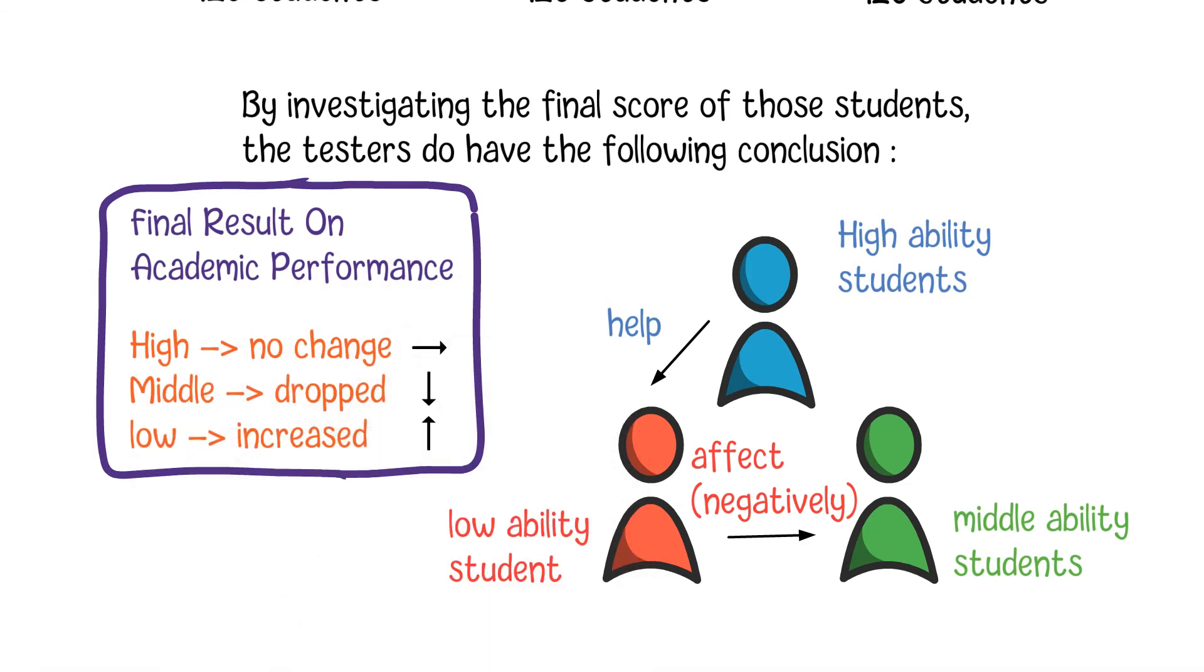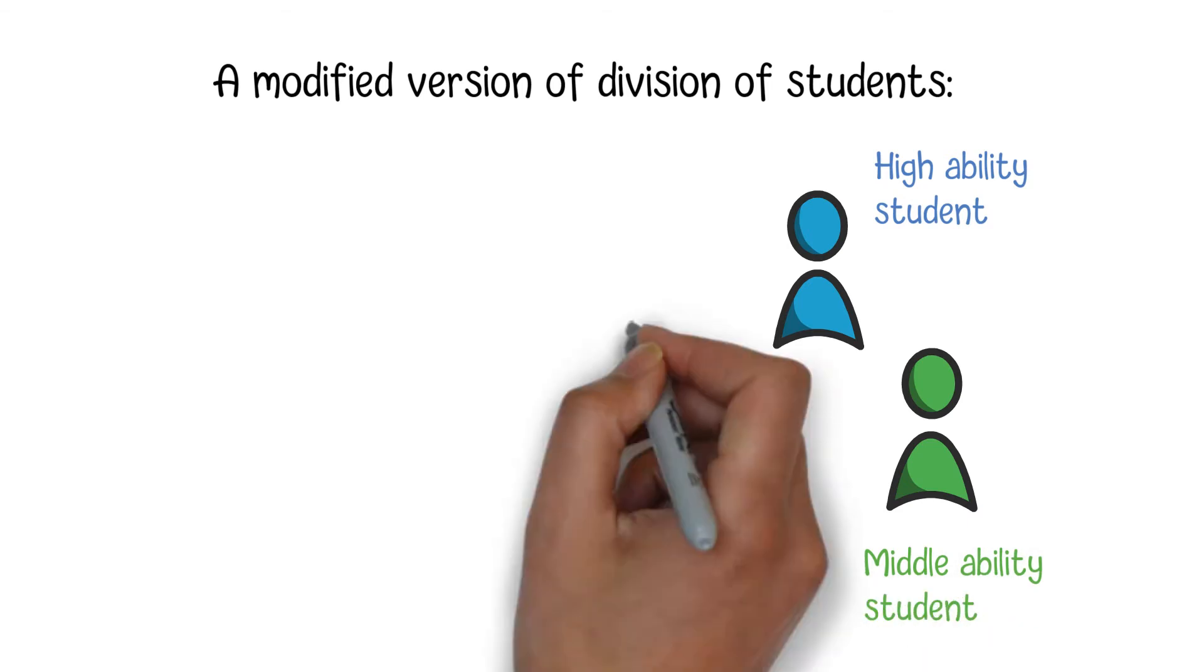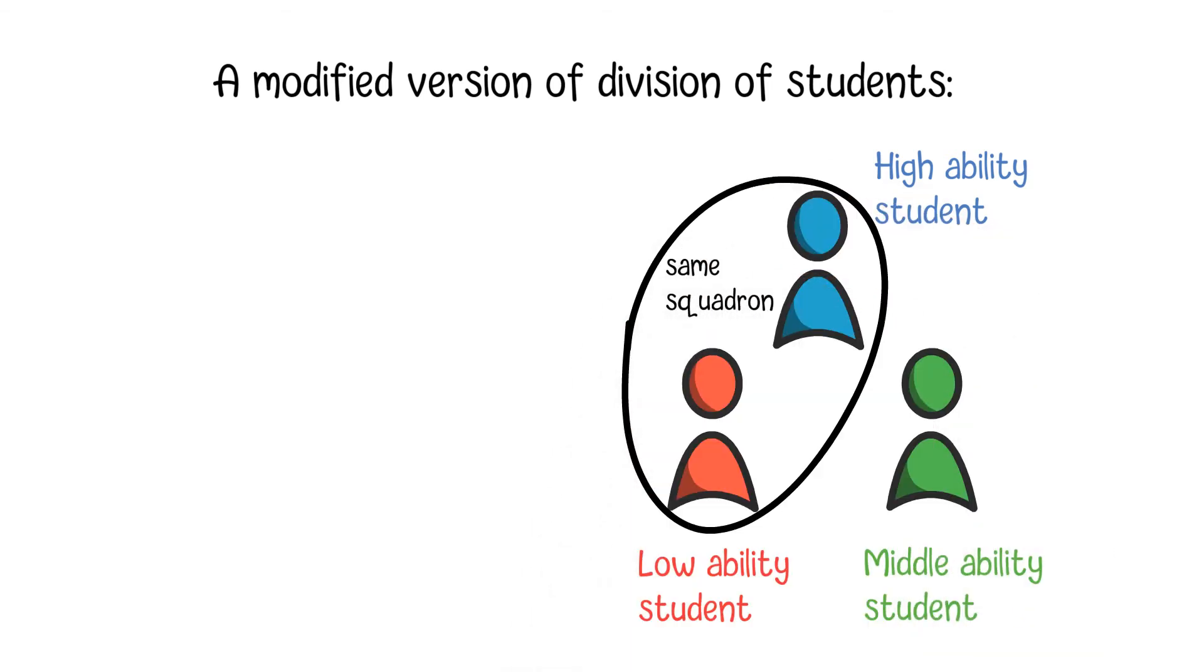Considering the fact that low-ability students have a negative influence on middle-ability students, the testers decided to modify the original division plan. High-ability and low-ability students are grouped into the same squadron, and middle-ability students are grouped into a separate squadron.